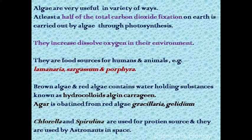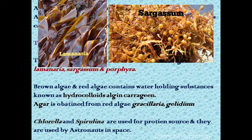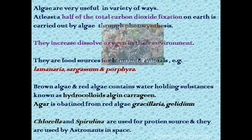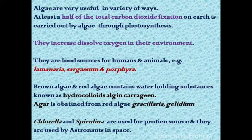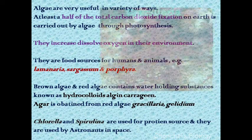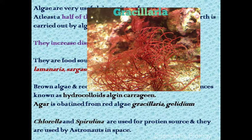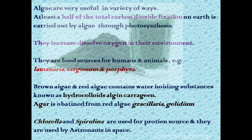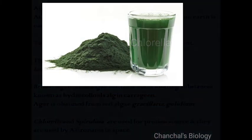Algae are very useful to us. At least 50% of carbon dioxide on Earth is fixed by algae. As they are carbon dioxide fixers, they increase dissolved oxygen in their environment. Many species are used as food sources like Laminaria, Sargassum, and Porphyra. Hydrocolloids are substances which have water-holding capacity, and these are found in brown and red algae like algin and carrageenan. Agar, a commercial product obtained from red algae like Gelidium and Gracilaria, is also used for preparation of ice cream, jellies and many more. Chlorella and Spirulina are used as protein supplements, even used by space travelers.